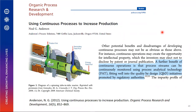Using continuous processes can potentially increase production — as Anderson showed in a 2012 publication, continuous processes can increase production while making use of PAT in line with the FDA's quality by design initiative. One example is a novel spinning tube-in-tube reactor — a different approach from the usual stirred tank or CSTR or plug flow reactor — featuring heat exchange, product inlet and outlet, and a secondary feed port, enabling PAT-enabled continuous operation matching QbD ideology.